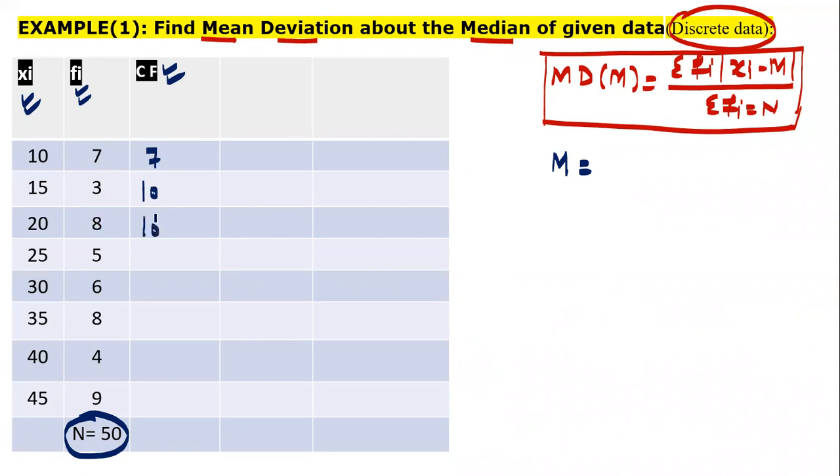10 plus 8, 18. 18 plus 5, 23. Plus 6, 29. Then, next would be 37. Then, 41, 50. Now, to find out median. We have to calculate N by 2. Because N is 50. Which is even. Even number. The median would be average of N by 2 term.